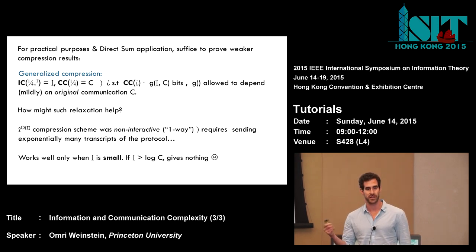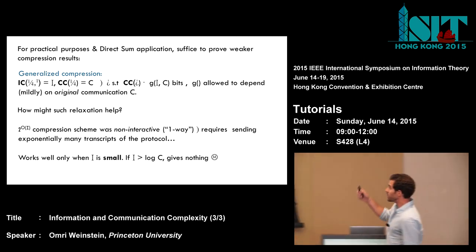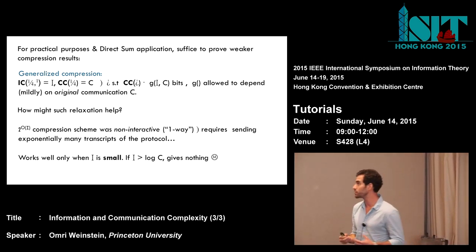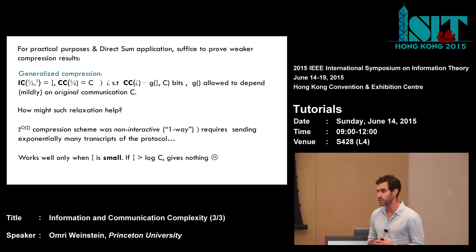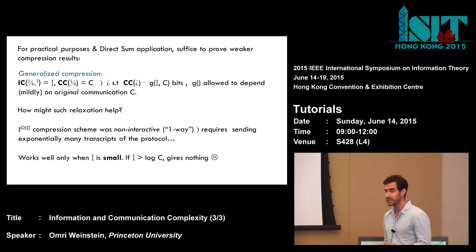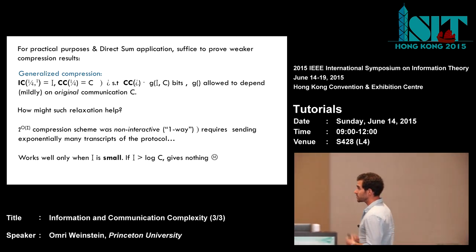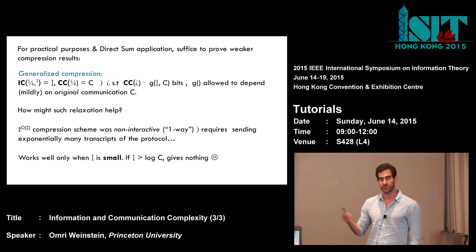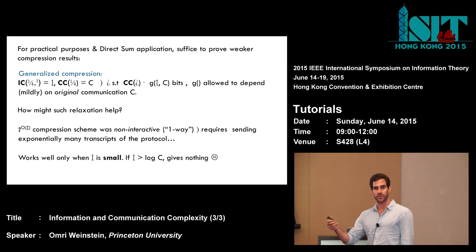We will see the exact quantitative application for the direct sum and for practical purposes. The idea is that in this model of compression, all we care about is making progress and shrinking c — so even if you can compress to something like i^5 times c^(4/5), that's good, as long as you shrink the communication. Let me try to convince you intuitively how such a relaxed or weaker notion of compression can help us make progress over the previous protocol.